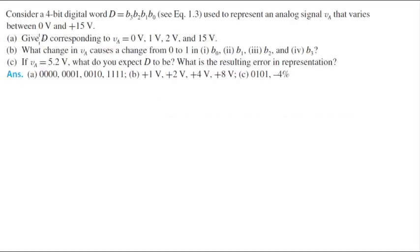For more videos visit ForTheSakeOfEducation.com. Alright guys, consider a 4-bit digital word D: B3, B2, B1, B0, used to represent an analog signal VA that varies from 0 to 15 volts. Give D for the corresponding voltage values. So this is part A.